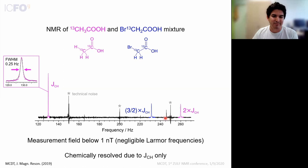Despite the confusing pattern, the line width is nice and narrow, even without any shimming. These couplings can be determined more precisely than in the 1.4 tesla field, where the line width was about one hertz.